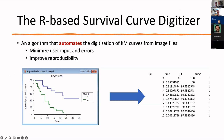The R-based survival curve digitizer is an algorithm that automates digitization of KM curves from image files. On the left-hand side is an example KM curve, and on the right-hand side is the output: a table showing how survival probability changes over time, with a curve identifier for multiple curves. Here there are two curves: curve 1 and curve 2.